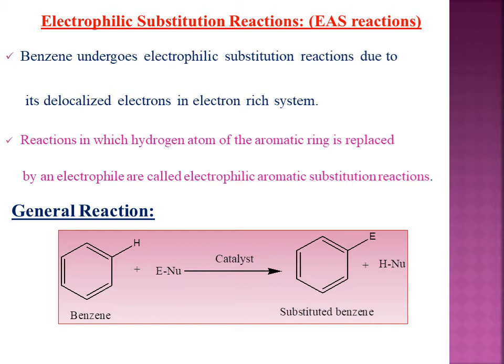Generally benzene undergoes electrophilic aromatic substitution reactions, simply named as EAS reactions. This happens because of delocalized electrons in the benzene system. Electrophilic aromatic substitution reactions are reactions in which the hydrogen atom of the aromatic ring is replaced by an electrophile.